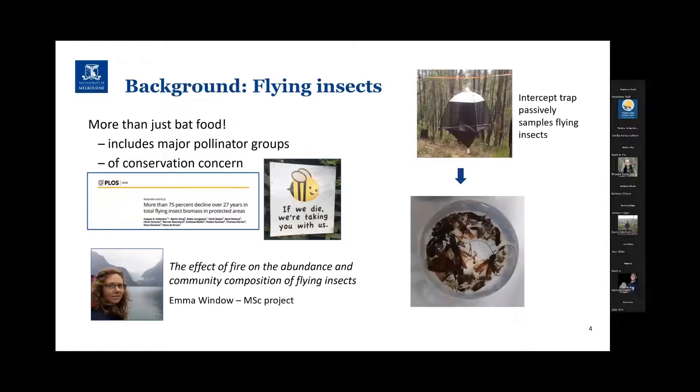So here comes Emma. Emma's a master's student who's looking at these flying insects as part of Sandra's broader project. We sample flying insects with intercept traps. These are passive samplers. In other words, the insect is just minding its own business, flitting about the forest, bumps into the trap, falls down into a collecting jar at the bottom.